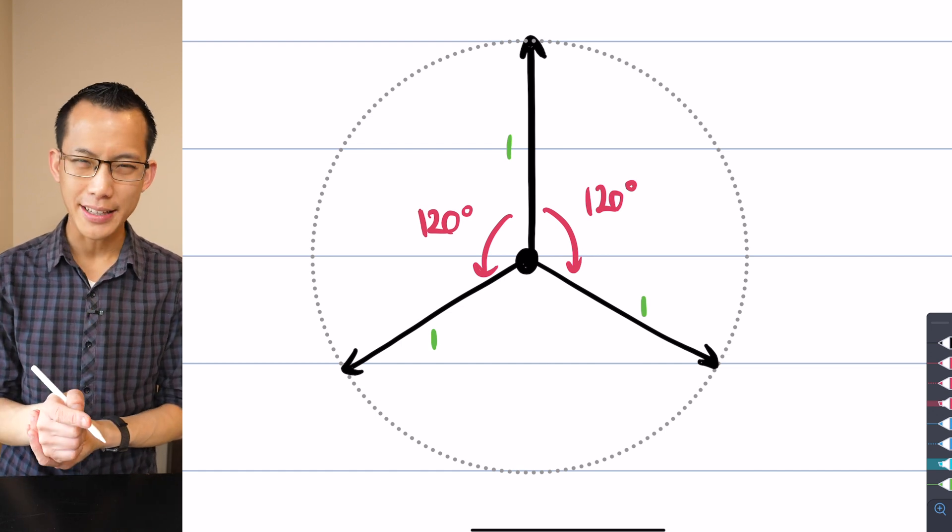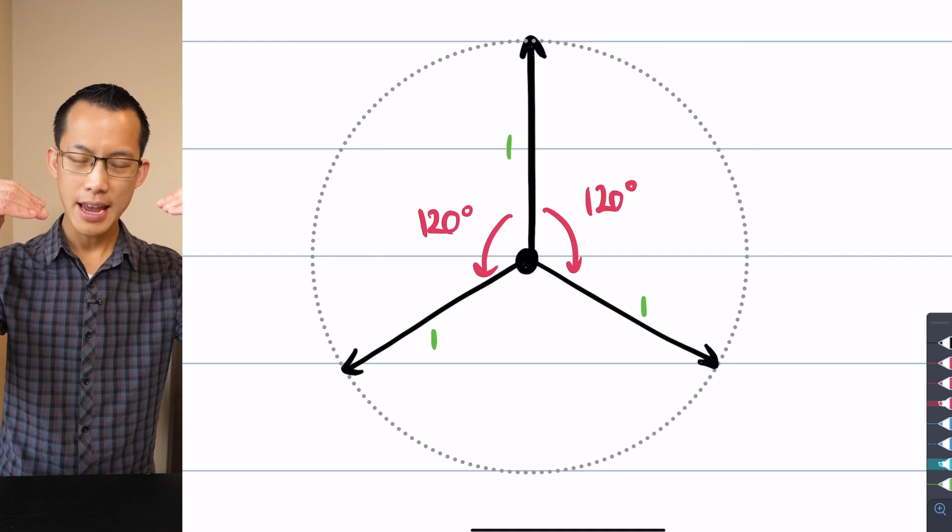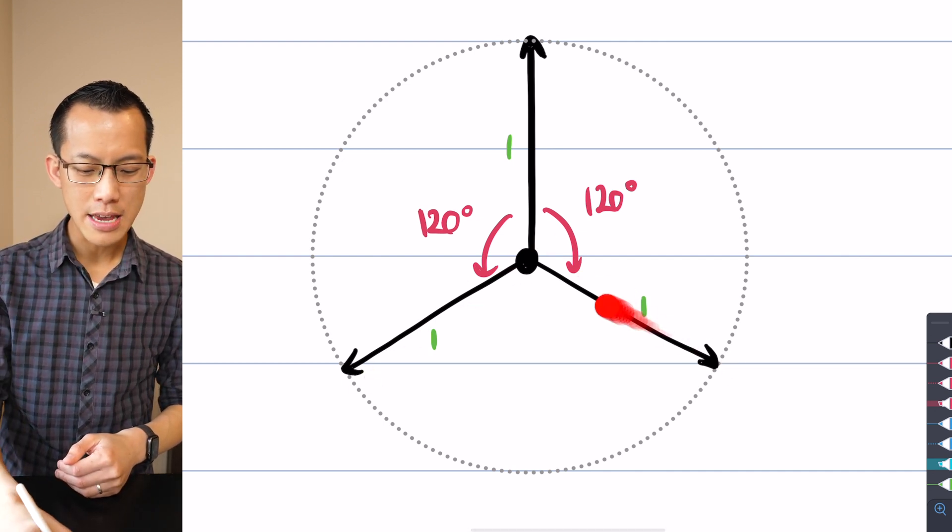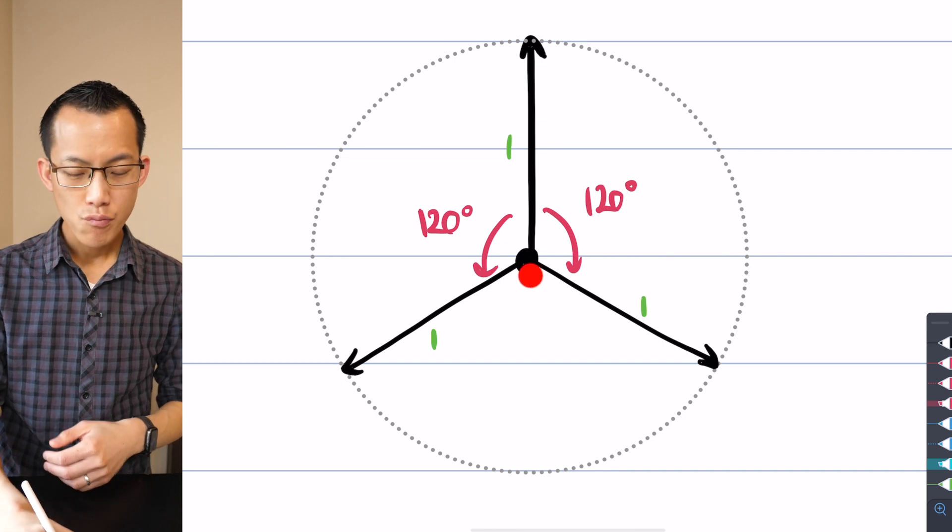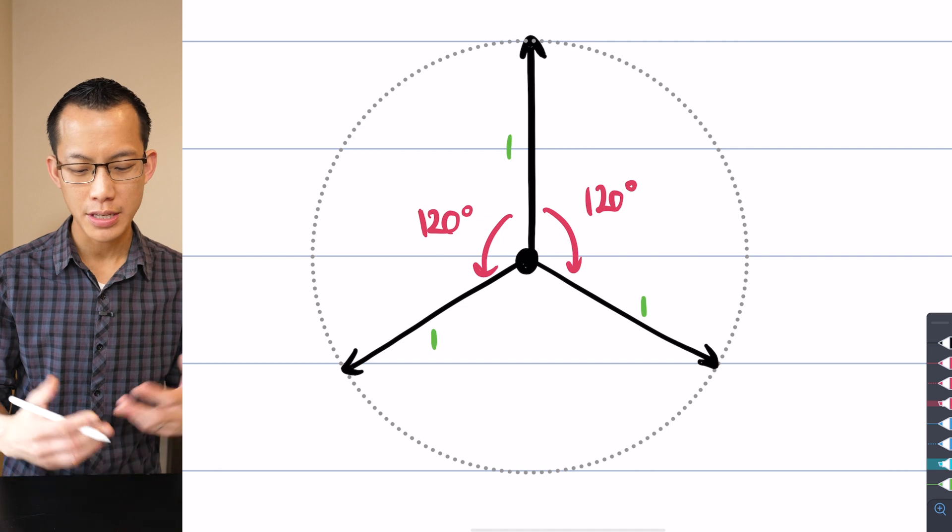But vertically, it's not quite so obvious. How much are they actually pulling in the downward direction? Do these two evenly balance out with this one? It's going to depend on the angles.